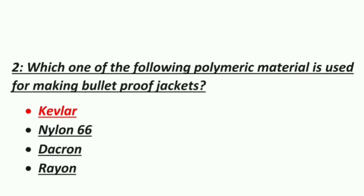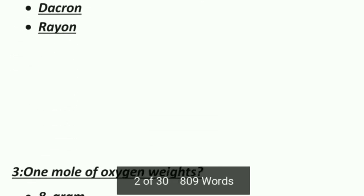Next MCQ: which polymeric material is used for making bulletproof jackets? Option 1: Kevlar, Option 2: Nylon 6,6, Option 3: Dacron, Option 4: Rayon. The correct answer is Kevlar — Kevlar is used for making bulletproof jackets.